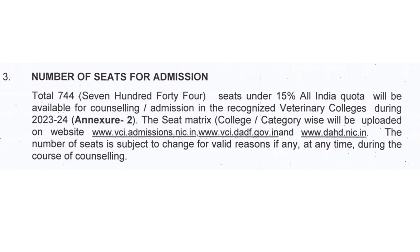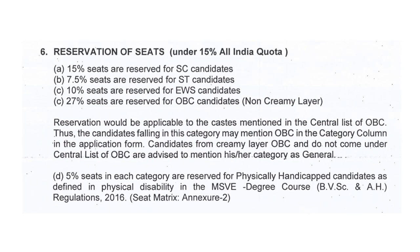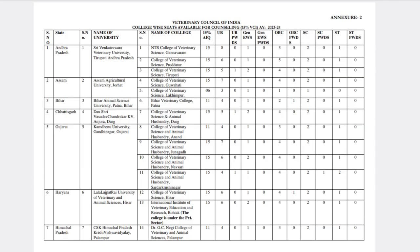Coming to the number of seats for admission — a total of 744 seats are under the 15% All India Quota, meaning 744 seats will be filled through VCI counseling. For the reservation of seats: SC candidates have 15% seats reserved, ST candidates 7.5%, EWS candidates 10%, and OBC Non-Creamy Layer candidates 27%.